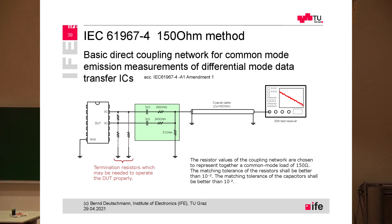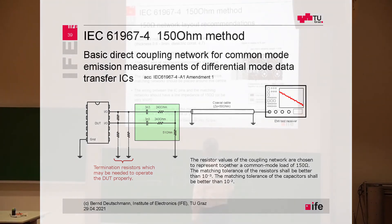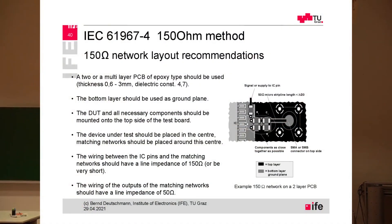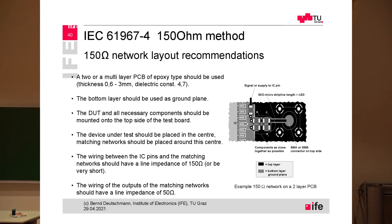The combined common mode emission is measured as a voltage drop across the 51-ohm resistor. The standard also recommends where and how to place the components. The SMA connector connects the coaxial cable to the EMI receiver, and there should be a 50-ohm microstrip line from the network to the SMA connector, maintaining a 50-ohm system as close as possible to the IC.